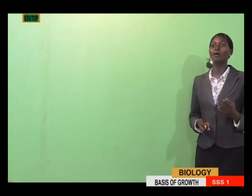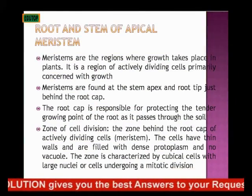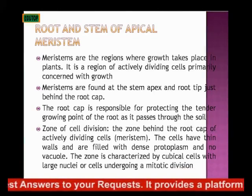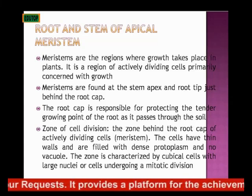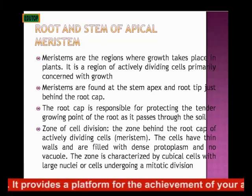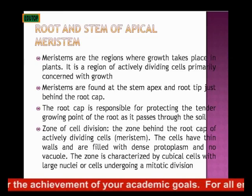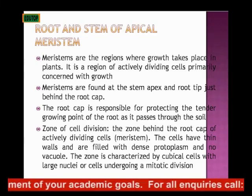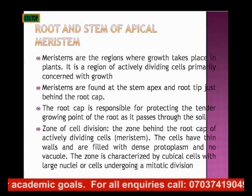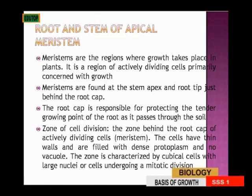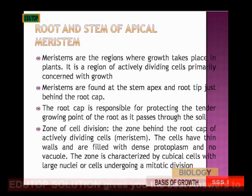Now we move on to talk about the roots and stem apical meristem, still talking about growth but now tailoring into plants. Meristems are the regions where growth takes place in plants — found at the stem apex, that is the tip of the stem, and at the root tip just behind the root cap. Those are the places where growth occurs first. The meristem is the region of actively dividing cells.